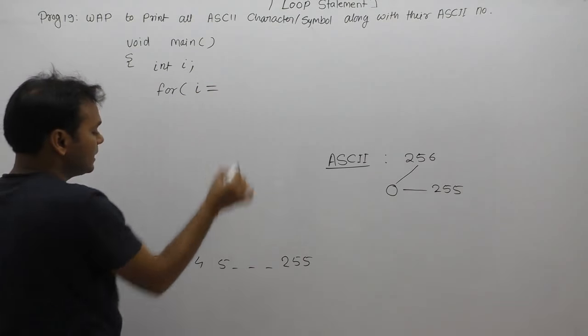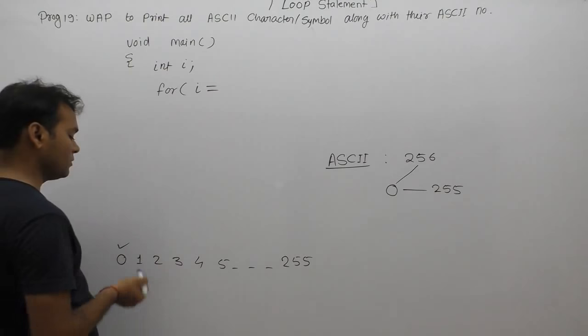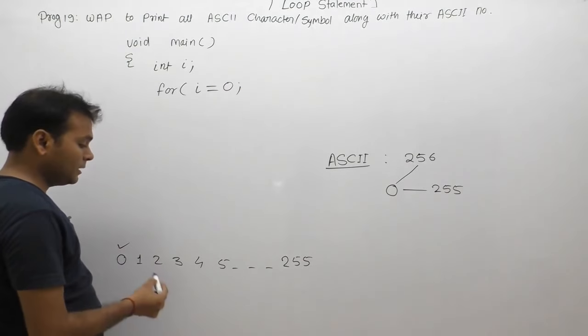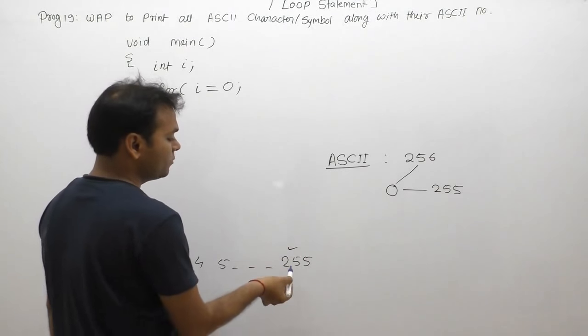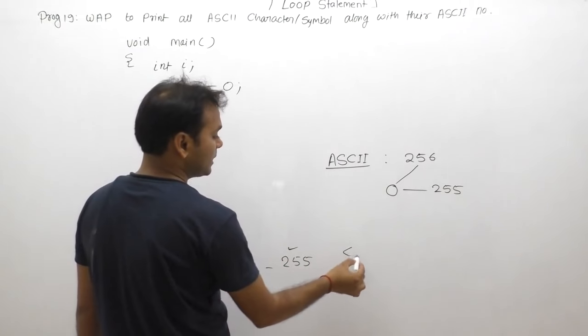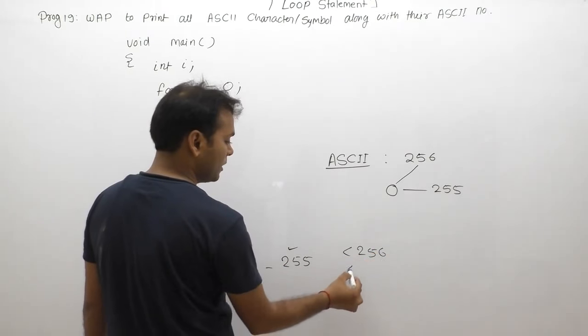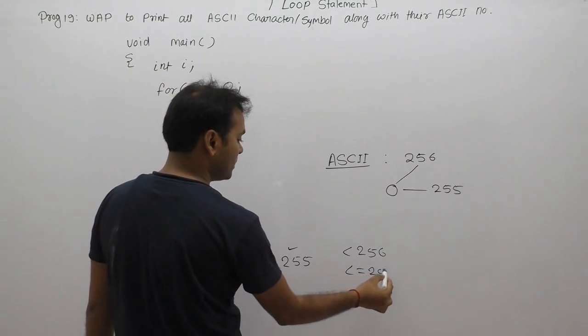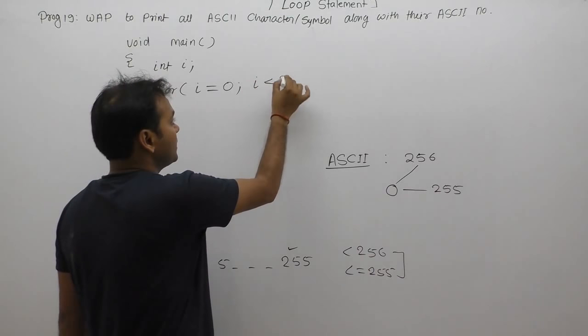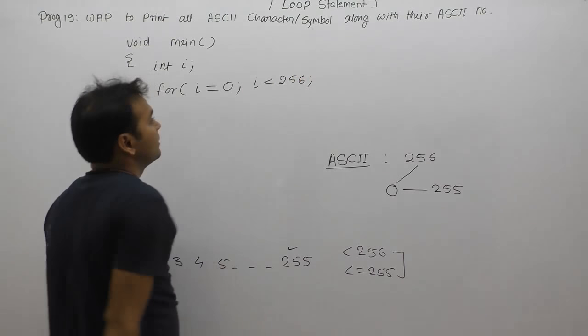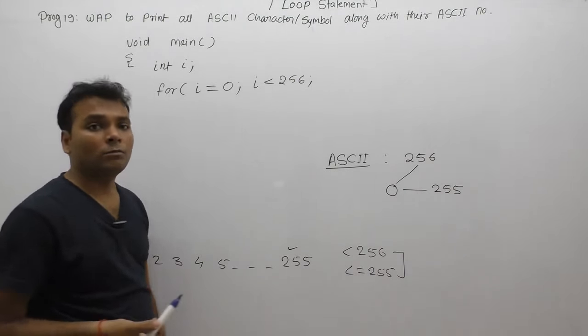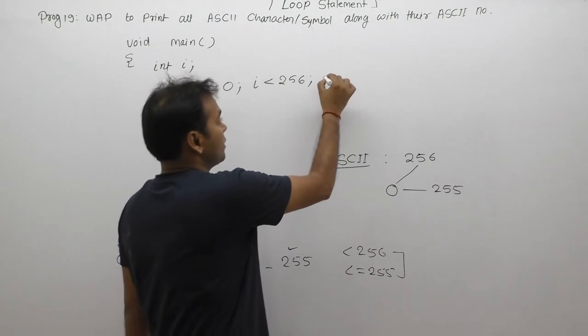For loop has three sections. Initialization: first value is 0. Next, execute until i's value reaches 255, or we can say less than 256 or less than equals to 255 - both conditions are the same. In this case, I'll use i less than 256. Then every time, increment by 1.